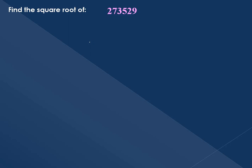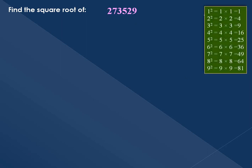Your question is to find the square root of 2273529. This number's square root can be found using the long division method. Starting from squares of numbers one to nine, we need to find the square root of this number: 2735229.